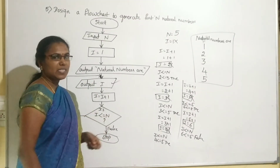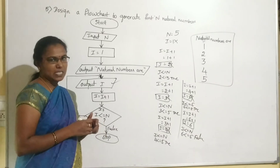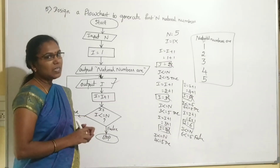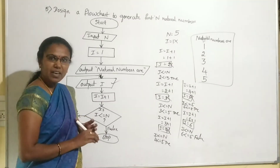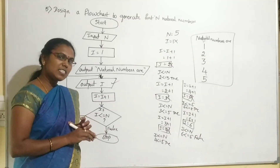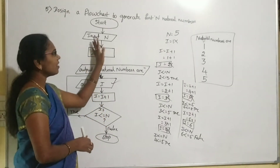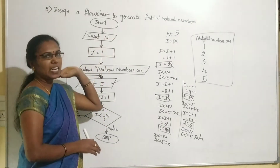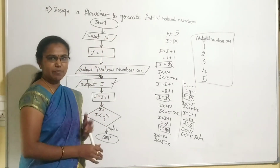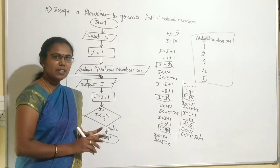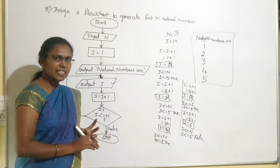This is called a looping statement. This is the way to construct a flowchart to generate the first N natural numbers.